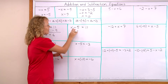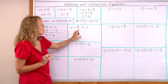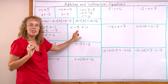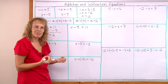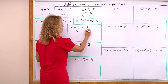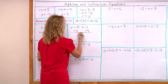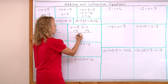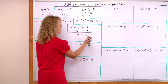Over here, again I want x alone on this side, but here there's a subtract 5. To counteract that, I will add 5 to both sides of the equation. On the left side, I have x alone now, and on the right side, 11 plus 5 is 16.